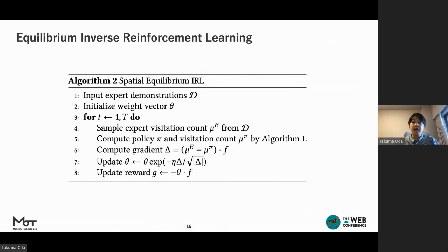The entire reward learning process is shown in this slide. Similar to MaxEnt IRL, the algorithm iterates through estimation of the equilibrium policy and the visitation count, and reward parameter updates with exponentiated gradient descent.